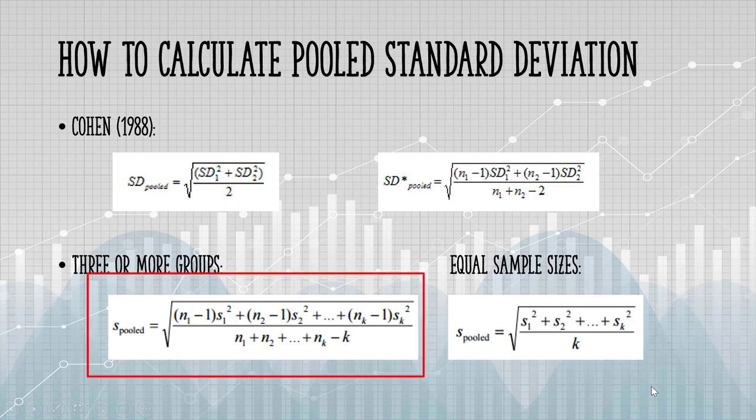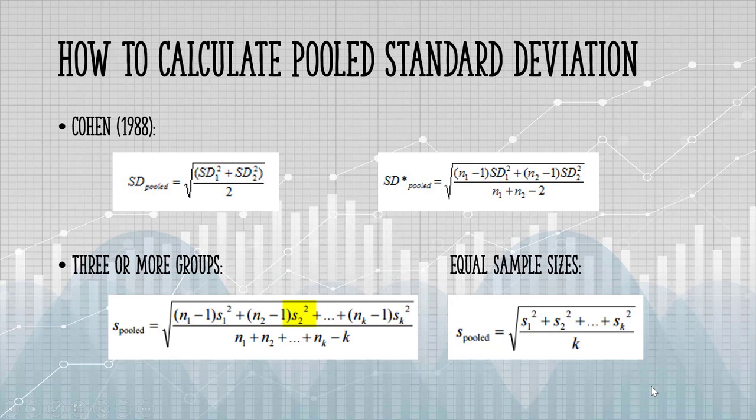For three or more groups, use this formula. S-sub-1, S-sub-2 and so on are the individual samples, and S-squared are the sample standard deviations.